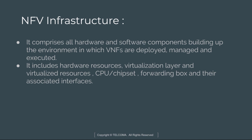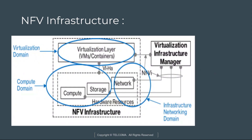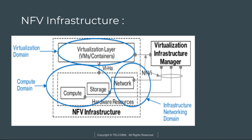NFVI infrastructure comprises all hardware and software components required for building the environment in which virtualized network functions are deployed, managed, and executed. It includes hardware resources, a virtualization layer, and virtualized resources such as GPU, CPU, chipset, forwarding box, and their interfaces. NFVI has three domains: the compute domain, the infrastructure networking domain, and the virtualization domain, which includes the manager virtualization layer and containers.